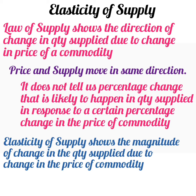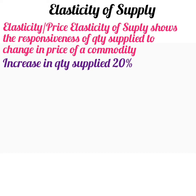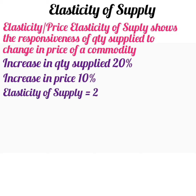Hence, elasticity of supply shows the quantum of change in quantity supplied in response to change in price of the commodity. The elasticity of supply, or price elasticity of supply, shows the responsiveness of quantity supplied to change in price of a commodity. For example, if the quantity supplied increases by 20% in response to a 10% increase in the price of the commodity, it means that the responsiveness of quantity supplied is two times in comparison to the change in price. Hence, the elasticity of supply would be 2 in this case.